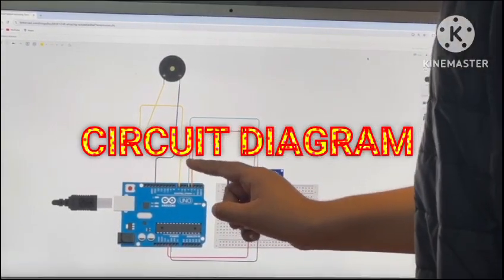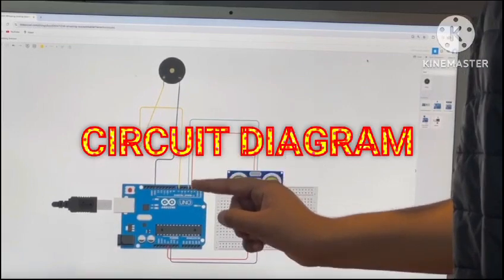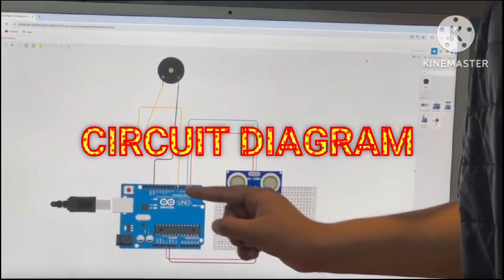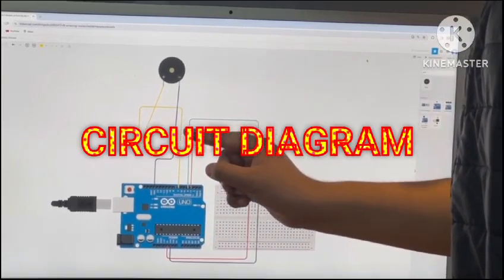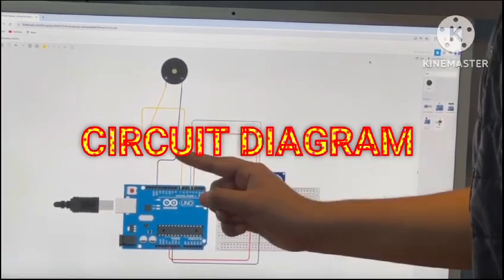The buzzer is connected to the positive energy with the help of pin number 7 of the Arduino UNO board and the negative energy supply is going from the ground of the UNO board to the negative part of the buzzer.